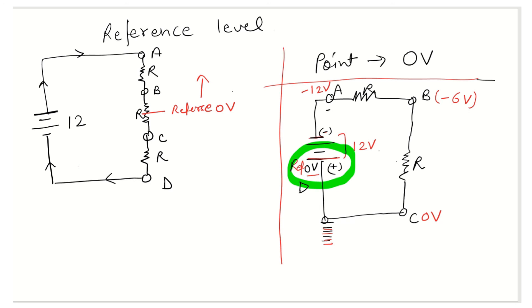Going above the reference, the voltage should be positive because that side is connected to the positive side of the battery and is at a higher potential. The lower part should have negative voltage because that side is connected to the negative side of the battery.